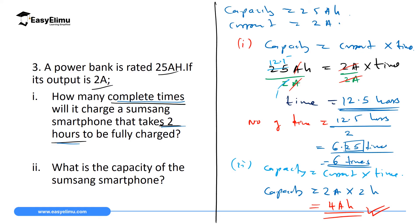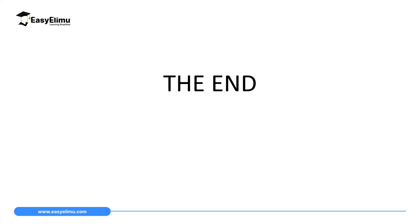You can use this knowledge when buying a power bank or charger. When buying a power bank, look at the capacity in ampere-hour or milliampere-hour. When buying a charger, check the output — 1 A and 1.5 A chargers charge slowly, while 2 A, 2.1 A, and 2.4 A chargers are faster. That marks the end of this lesson. Stay tuned to ECLIMU Learning Simplified.